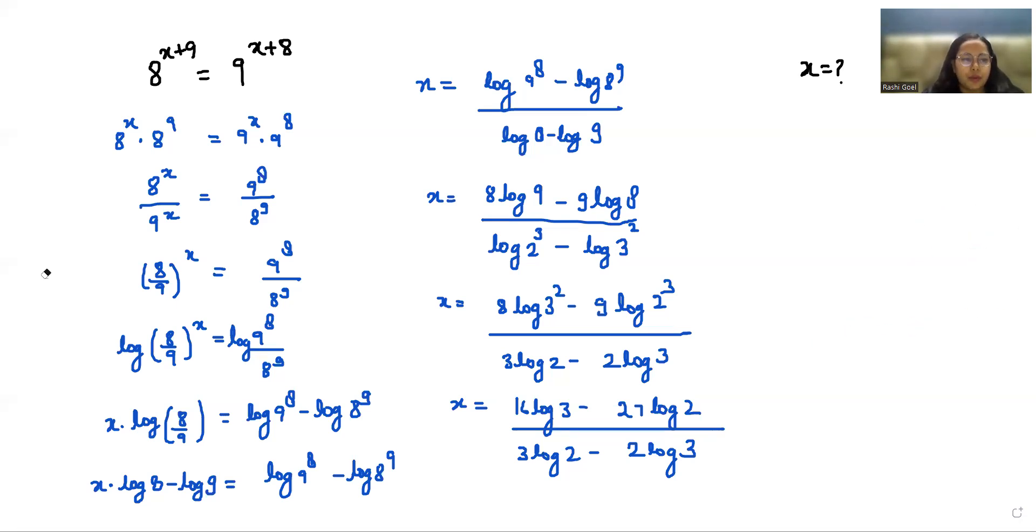Now I'm going to put the value of log 2 and log 3. Log 2 is 0.301 and log 3 is 0.4771. So x equals 16 times 0.4771 minus 27 times 0.301.